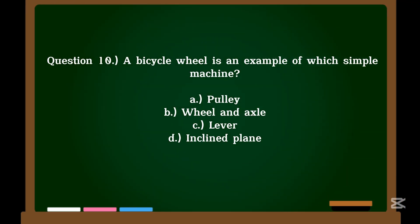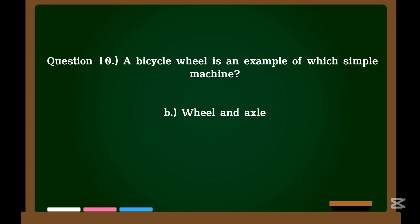Question 10. A bicycle wheel is an example of which simple machine? A. Pulley. B. Wheel and axle. C. Lever. D. Inclined plane. Correct answer: B. Wheel and axle.